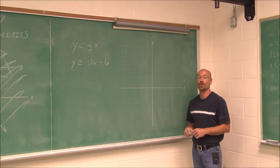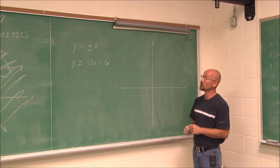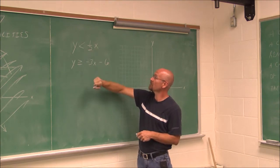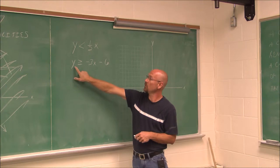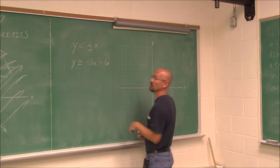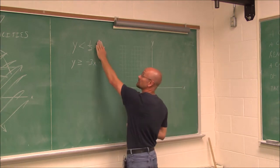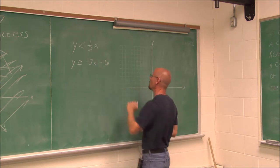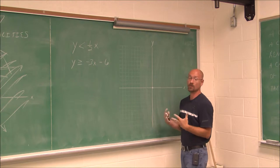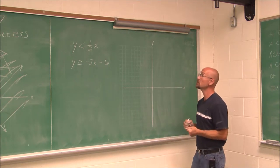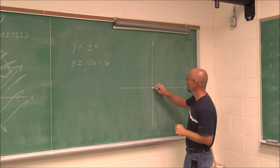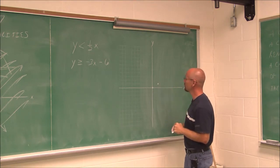Let's look at another example. For this example, I did manage to get some colored chalk, so hopefully we'll see it a little clearer. Here we have y is less than one-half x, and y is greater than or equal to negative 3x minus 6. I'm going to graph the first one using intercepts. If x is 0, then y is 0, so the origin is the only intercept. I need a second point, so I'll use the slope: if I go up 1 and over 2, I have a second point.